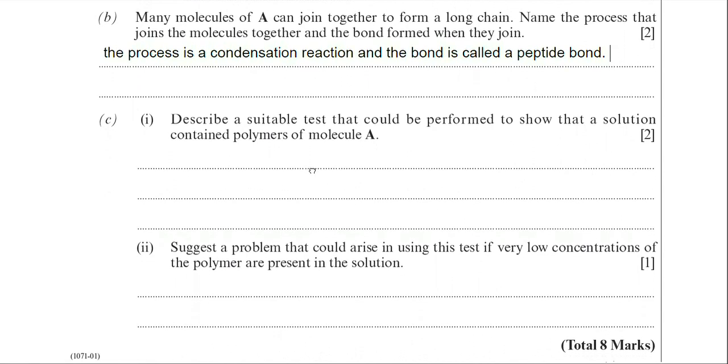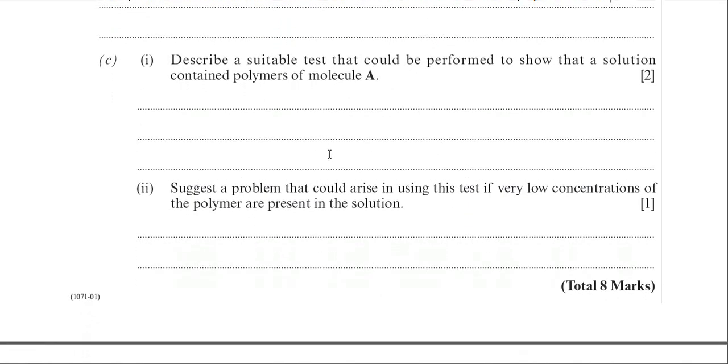Part C then. Again, describe a suitable test that could be performed to show that a solution contained polymers of molecule A. Again, you potentially could have lost two marks if you didn't know what molecule A was. So this could have been a very costly question if you hadn't revised proteins and amino acids. This is why it's so essential to be thoroughly prepared for your exams.